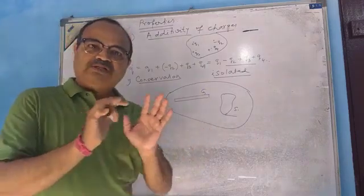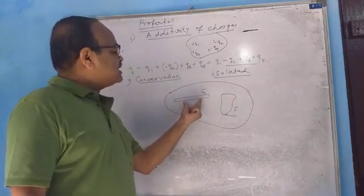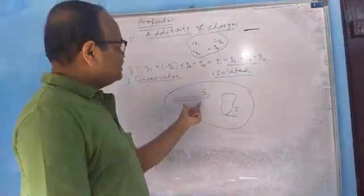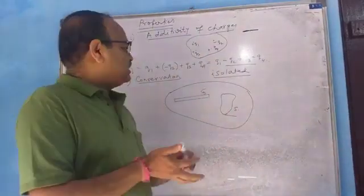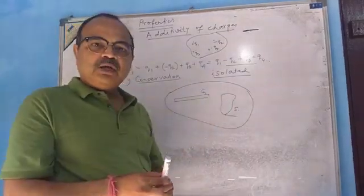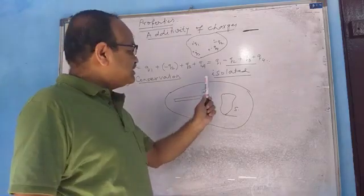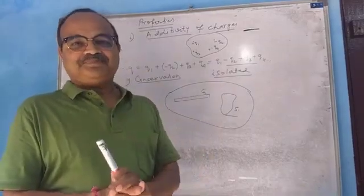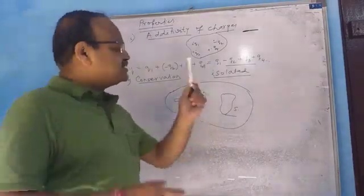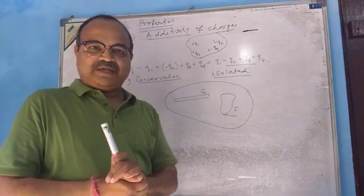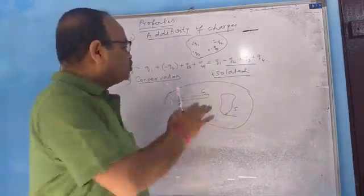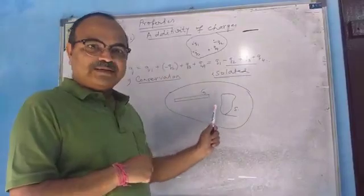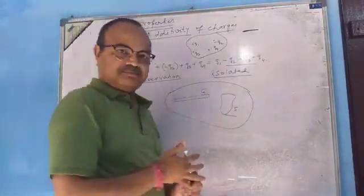Initially, both the glass rod and silk cloth are neutral — meaning the amount of positive charge equals the amount of negative charge, so total charge is zero. After rubbing, electrons are transferred from the glass rod to the silk cloth. By whatever amount the glass rod becomes positively charged, by the same amount the silk cloth becomes negatively charged. But the total charge of the system remains the same — it is conserved. This is the conservation of charge, and it applies to an isolated system.